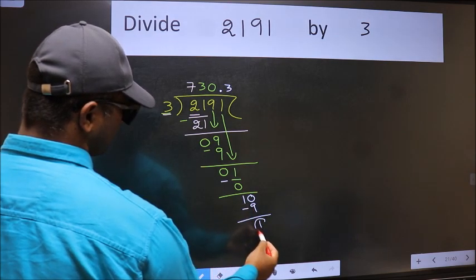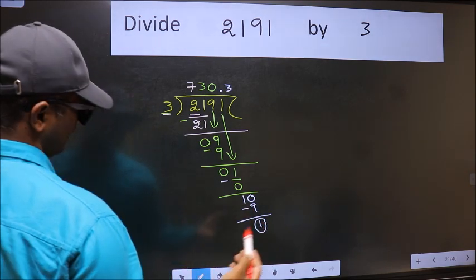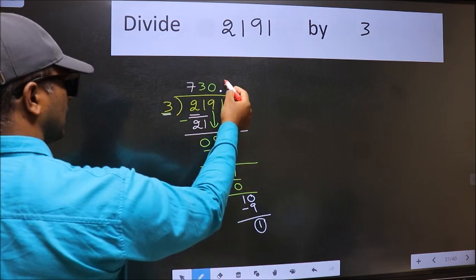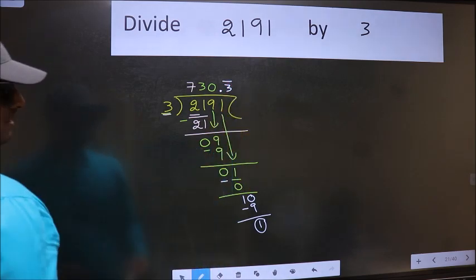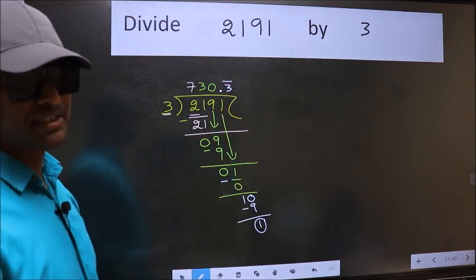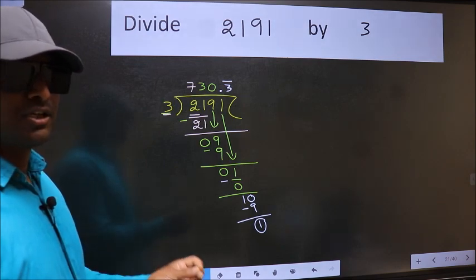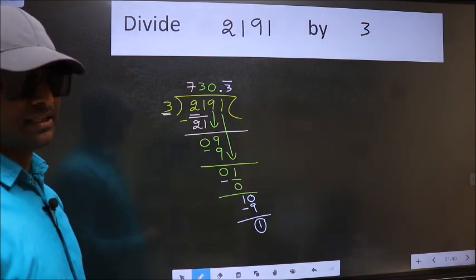Now we should subtract. We got 1 again. That means we get bar on this number. Did you understand where the mistake happens? You should not do that mistake.